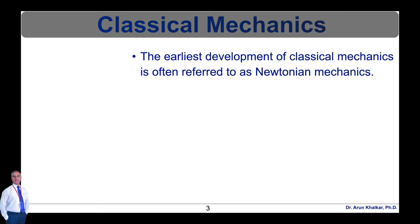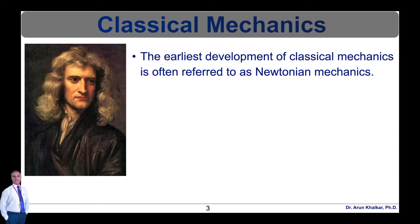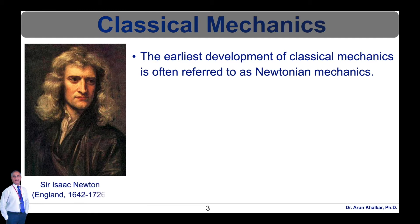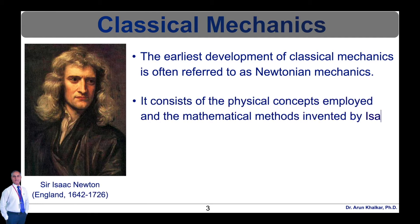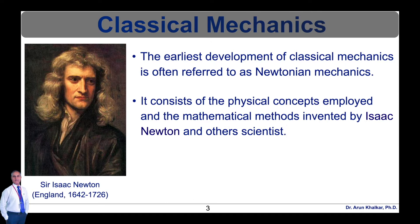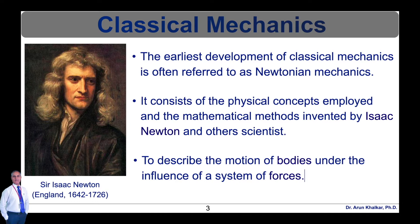The earliest development of classical mechanics is often referred to as Newtonian mechanics. It consists of the physical concepts employed and the mathematical methods invented by Sir Isaac Newton and others in the 17th century to describe the motion of bodies under the influence of a system of forces.